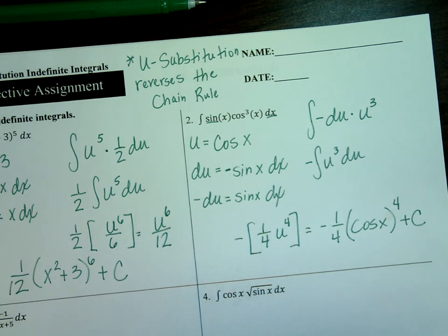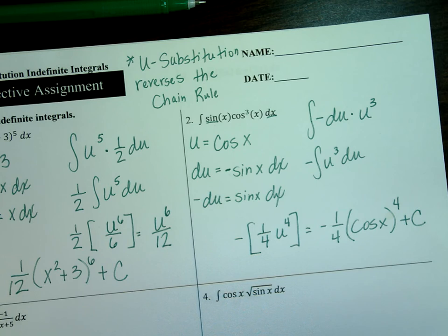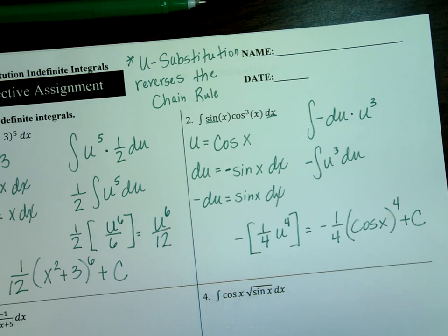Is it more correct to write negative one-fourth as opposed to cosine over four? The question is: is it better to write negative one-fourth cosine to the fourth, or write it as negative cosine to the fourth over four? The answer is they are both equally the same — Mr. AP appreciates it either way. It doesn't matter which way you put it.